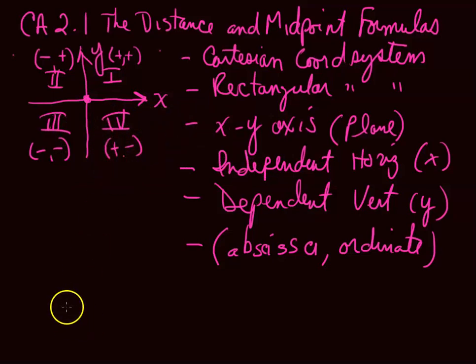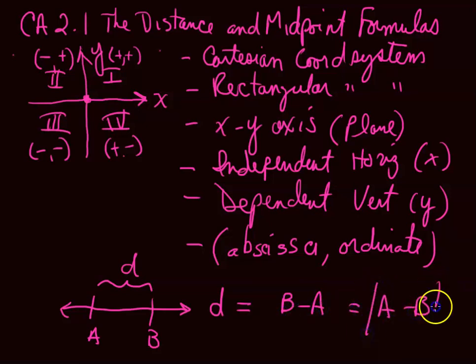use distance, not on the number line which we already know. What is distance on the number line? Let's say from A to B, this distance we'll call D. And how do we find distance on the number line? Well, you could do B minus A, but you could also do A minus B, just so that you take the absolute value because distance doesn't care about direction. But that's on the number line. Now we're going to find the midpoint and the distance in the plane, the XY plane, the Cartesian coordinate system, the rectangular coordinate system. That is objective one.